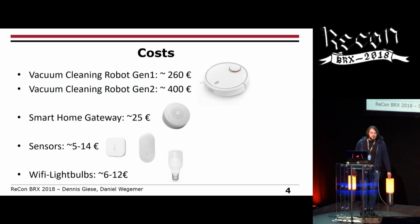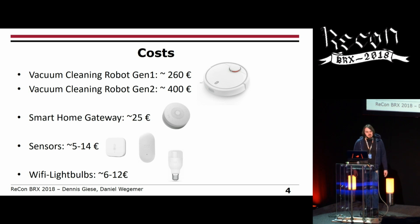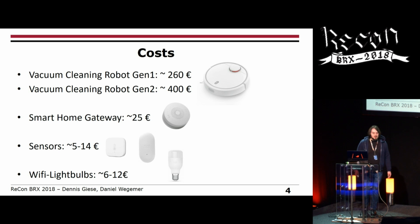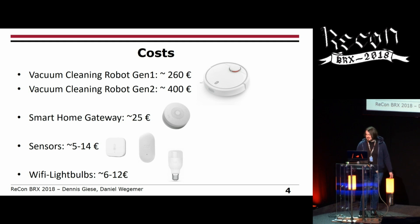To give you some impression about the cost: you can get a vacuum cleaner with LiDAR for around 260 euros. The generation 2, which can do mapping, costs about 400 euros. The smart gateway is very cheap, the sensors are very cheap, and you can get Wi-Fi connected light bulbs for between 6 and 12 euros, including shipment from China.